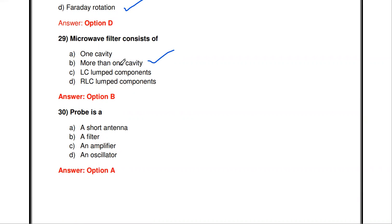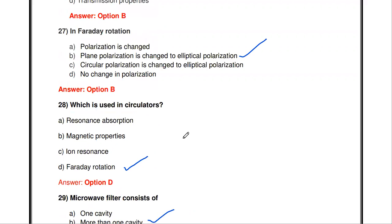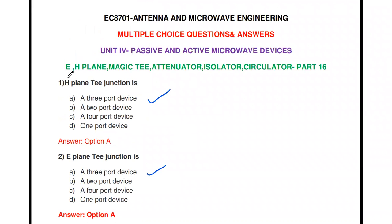The microwave filter consists of — one cavity, more than one cavity, LC lumped components? The microwave filter consists of more than one cavity. A probe is a — short antenna, filter, amplifier, or oscillator? A probe is a short antenna. These are the important questions about microwave passive components including E-plane T, H-plane T, magic T, attenuators, isolators, and circulators. Thanks for watching and please subscribe for more videos.